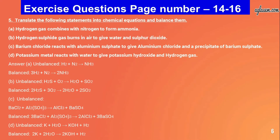Question number five: translate the following statements into chemical equations and balance them. A - hydrogen gas combined with nitrogen to form ammonia: unbalanced H₂ + N₂ → NH₃; balanced: 3H₂ + N₂ → 2NH₃. B - hydrogen sulfide gas burns in air to give water and sulfur dioxide: unbalanced H₂S + O₂ → H₂O + SO₂; balanced: 2H₂S + 3O₂ → 2H₂O + 2SO₂. C - barium chloride reacts with aluminium sulfate: unbalanced BaCl₂ + Al₂(SO₄)₃ → AlCl₃ + BaSO₄; balanced: 3BaCl₂ + Al₂(SO₄)₃ → 2AlCl₃ + 3BaSO₄.